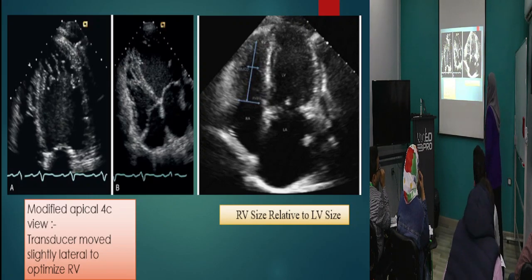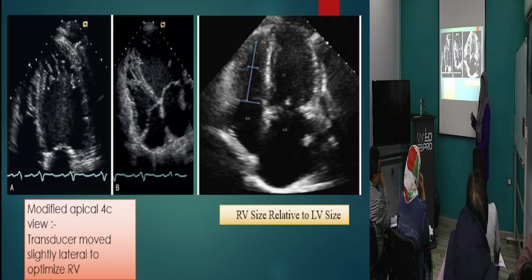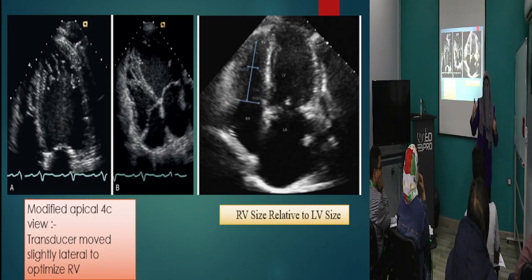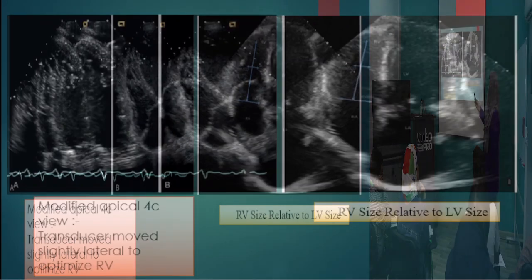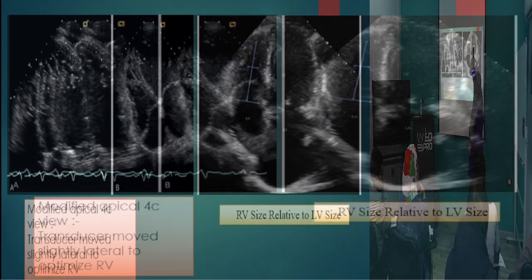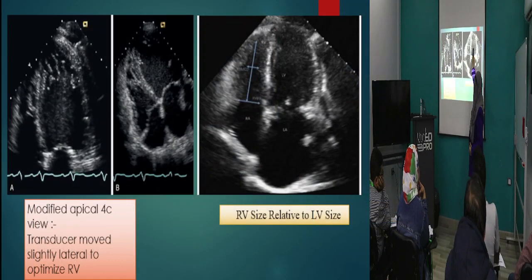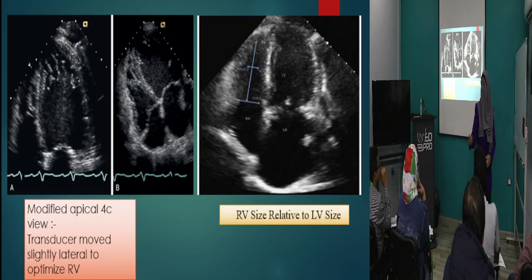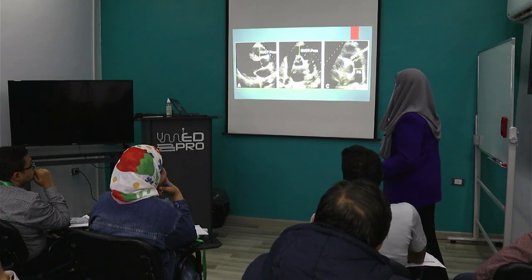We don't need to do any measurement. By eyeballing, as we said, we compare the RV size to the LV. If the RV is less than the LV, it is normal. If the RV is equal to the LV, it is moderately impaired. If the RV is greater than the LV, it is severely impaired.